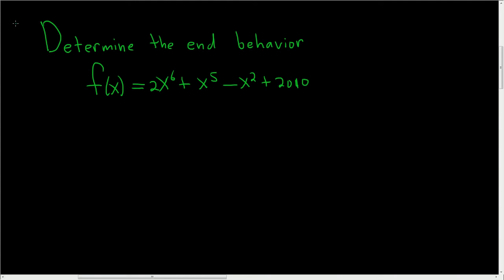We're being asked to determine the end behavior of this polynomial function. The first thing you want to look at is the leading coefficient. In this case, the leading coefficient is 2. It's the number in front of x to the highest exponent.